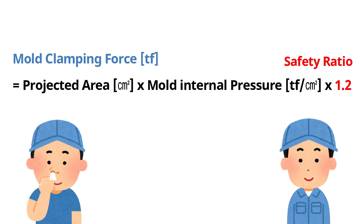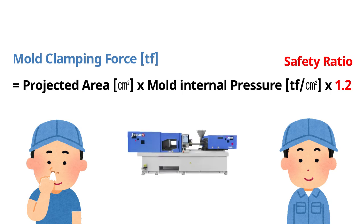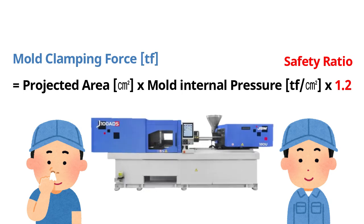If we calculate including this figure, the machine size would be bigger. Exactly, but we always have to include this safety ratio because we need to take into consideration the fluctuation of mold internal pressure depending on material kinds or product shape. I see.